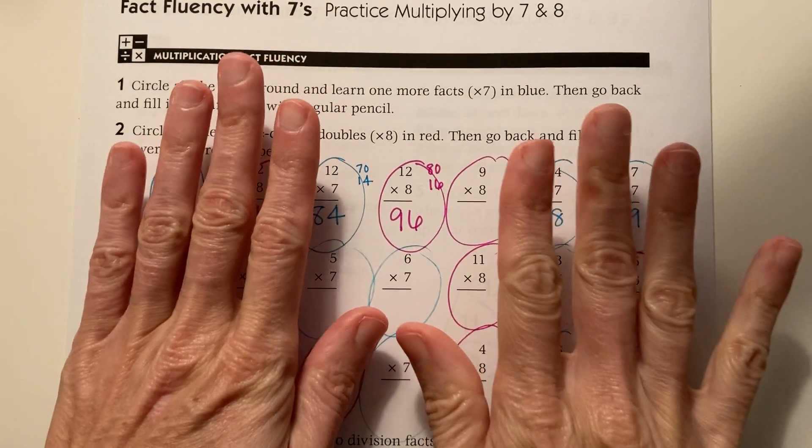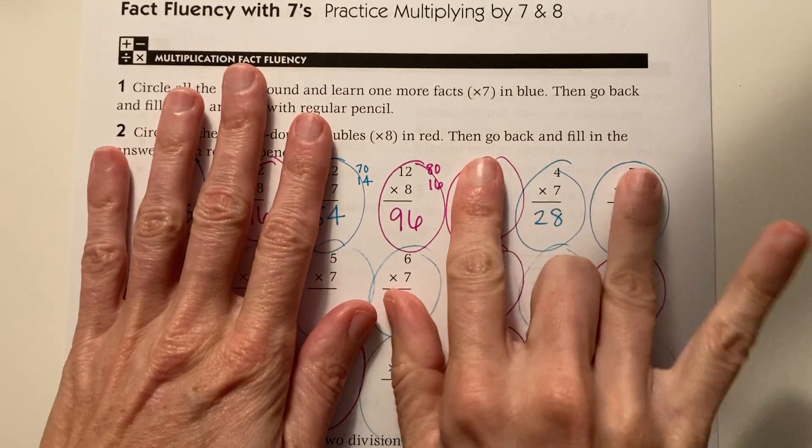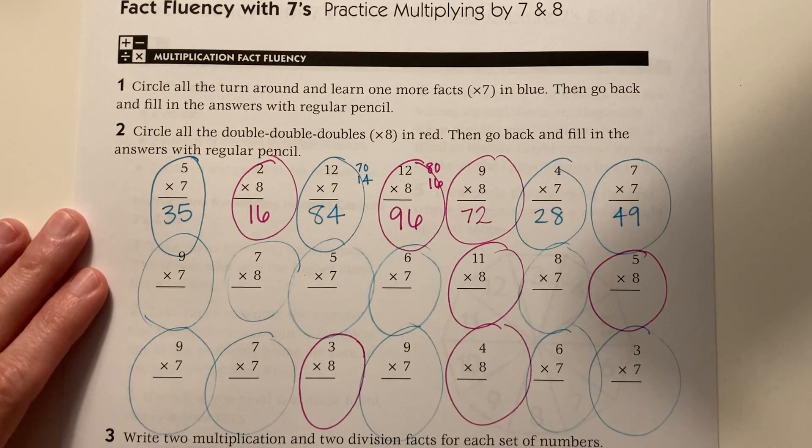Nine times eight. I'm going to use the finger strategy. Put down my eighth finger. I've got seven on one side, two on the other. Seventy-two. And keep going with that.